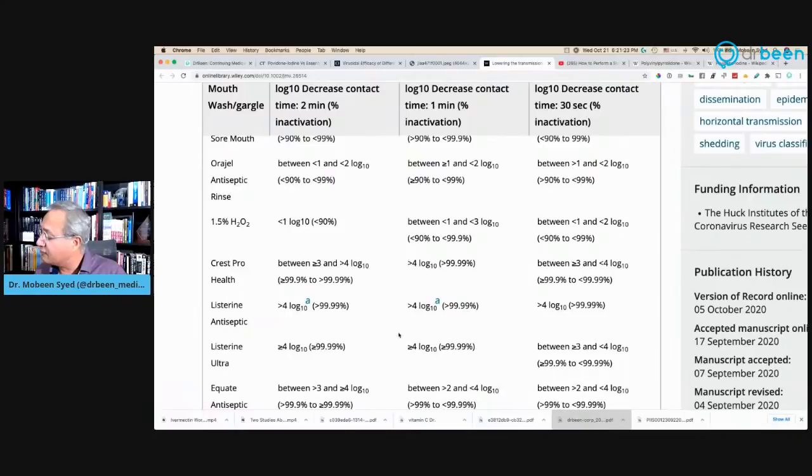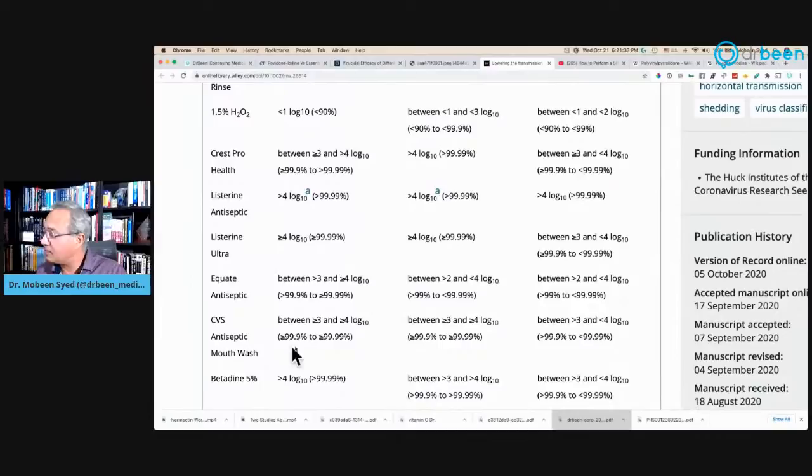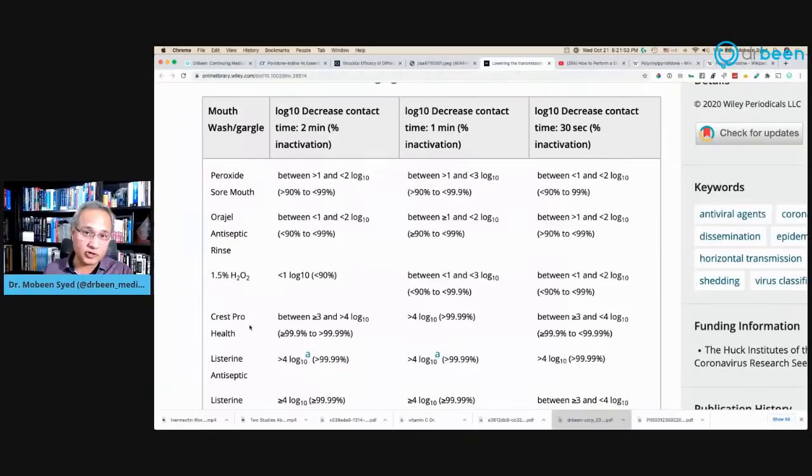Listerine. So the Listerine rinses thrice a day for as many days, I would say daily is very, very useful. Similarly, look at this one, Listerine Ultra had a similar effect. Then if you see here, CVS's antiseptic mouthwash also had a similar behavior like Listerine. Then betadine also have the same behavior. This is the iodine, the same behavior like Listerine. So iodine or Listerine or H2O2 peroxide, they are working. Although the previous study showed peroxide did not do much. But here, if you see peroxide sore mouth, 90 to 99%. So it is a little less efficacious than Listerine or betadine.